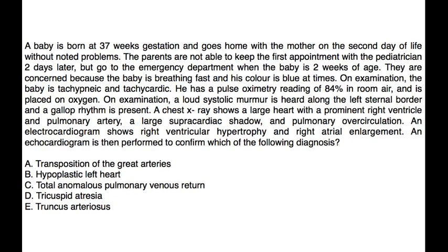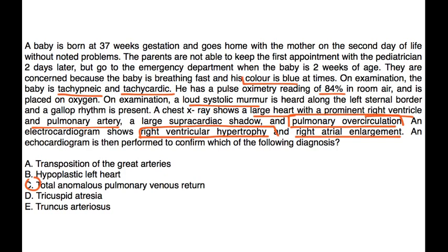Finally, a baby born at 37 weeks goes home on day two without noted problems. At two weeks of age, the parents bring the baby to the emergency department because he is breathing fast and turns blue at times. On exam, he is tachypneic and tachycardic with a pulse ox of 84% on room air. A loud systolic murmur is heard along the left sternal border and a gallop rhythm is present. Chest X-ray shows a large heart with a prominent right ventricle and pulmonary artery, a large supracardiac shadow, and pulmonary over-circulation. EKG shows right ventricular hypertrophy and right atrial enlargement. An echo is performed to confirm TAPVR — choice C — based on the pulmonary over-circulation, right ventricular hypertrophy, and cyanosis.